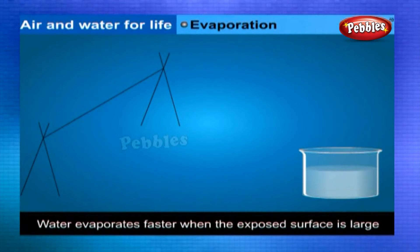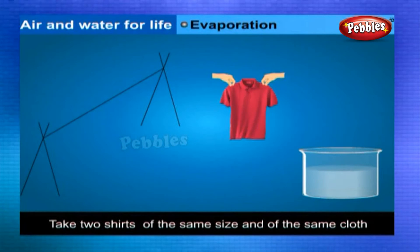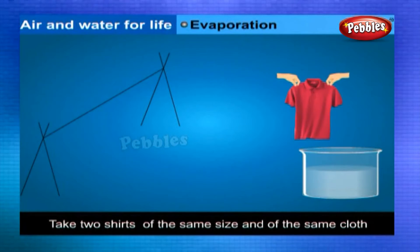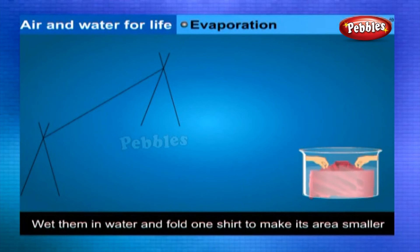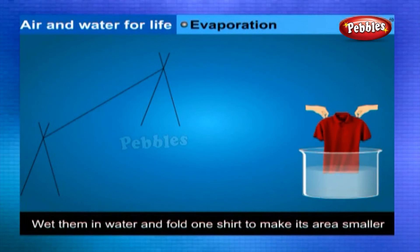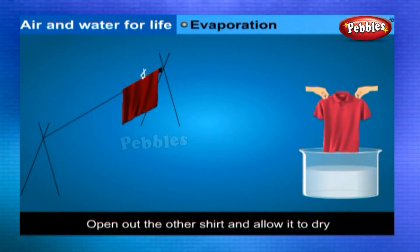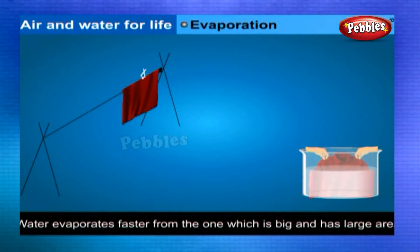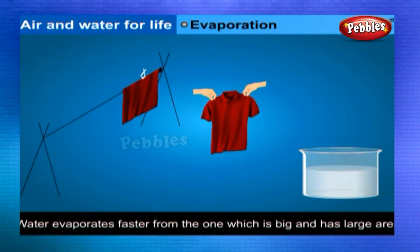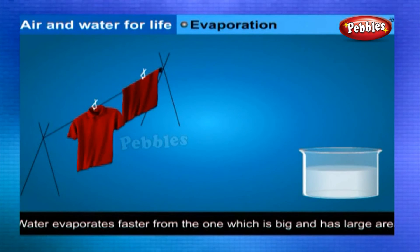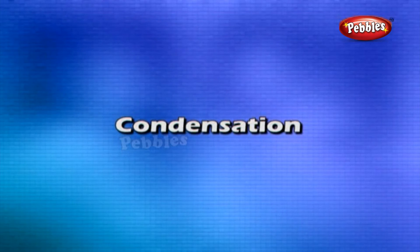Water evaporates faster when the exposed surface is large. Take two shirts of the same size and cloth, wet them in water. Fold one shirt to make its area smaller and open out the other. Allow them to dry — water evaporates faster from the shirt that is open and has a larger surface area.